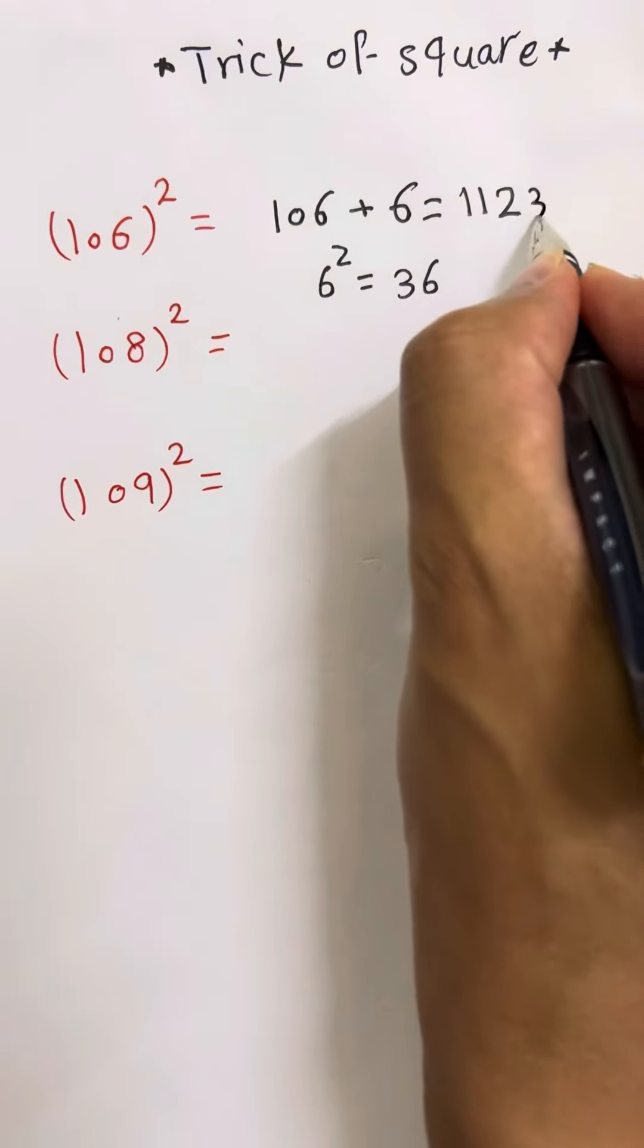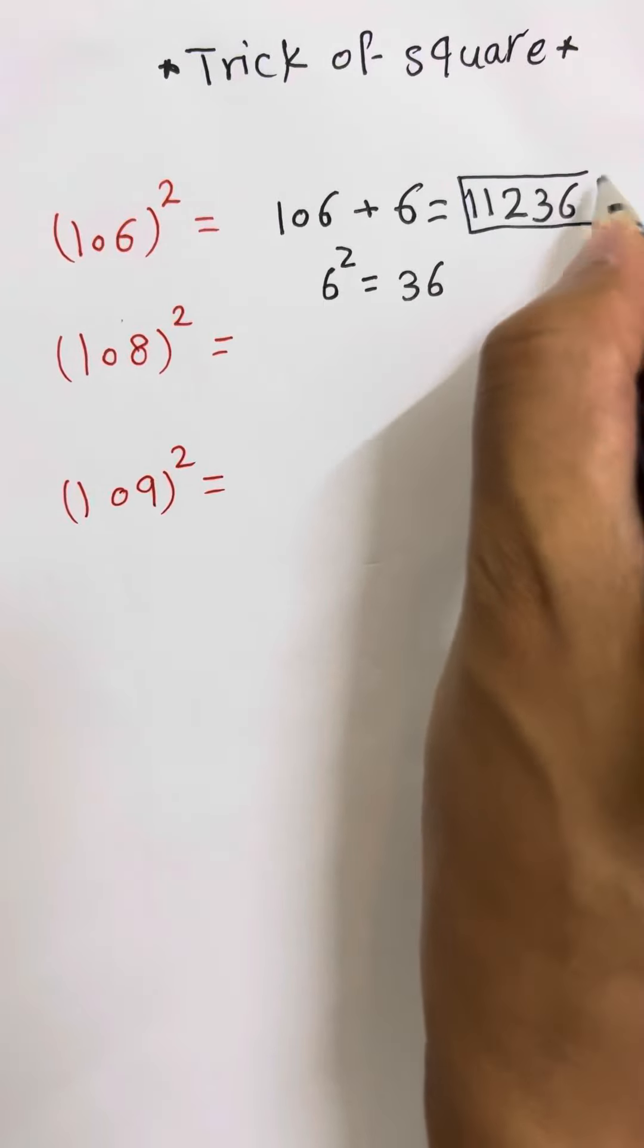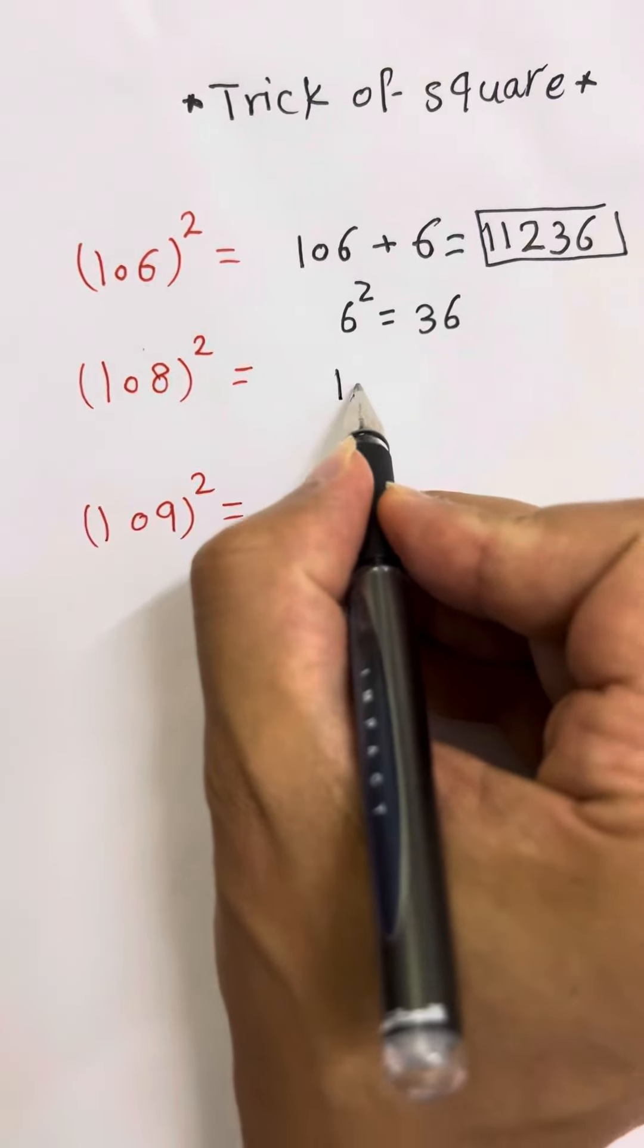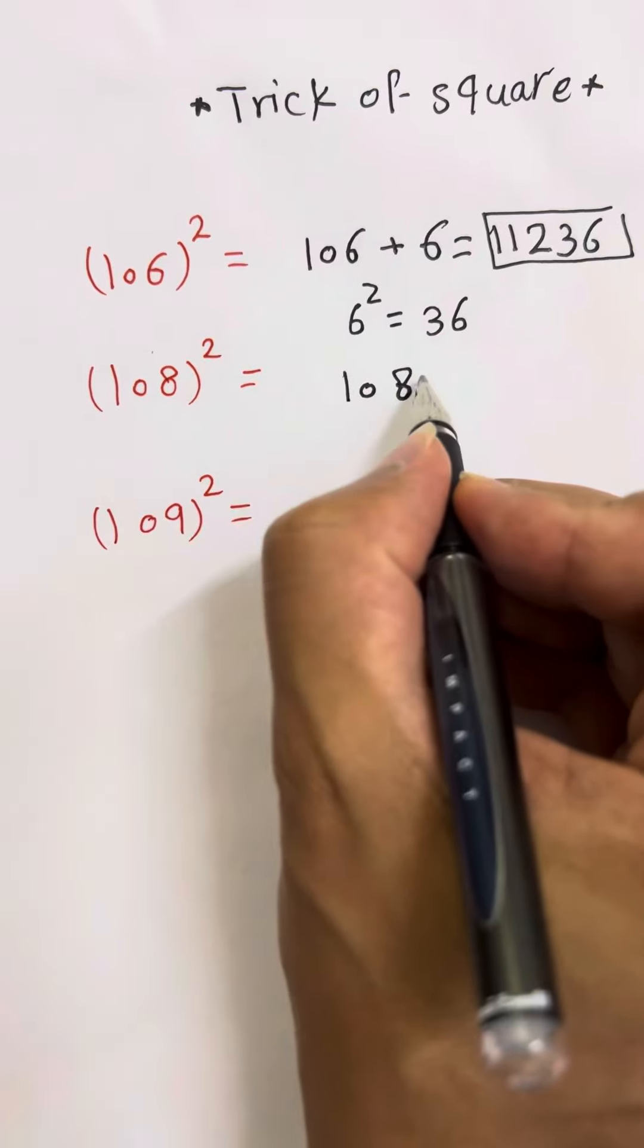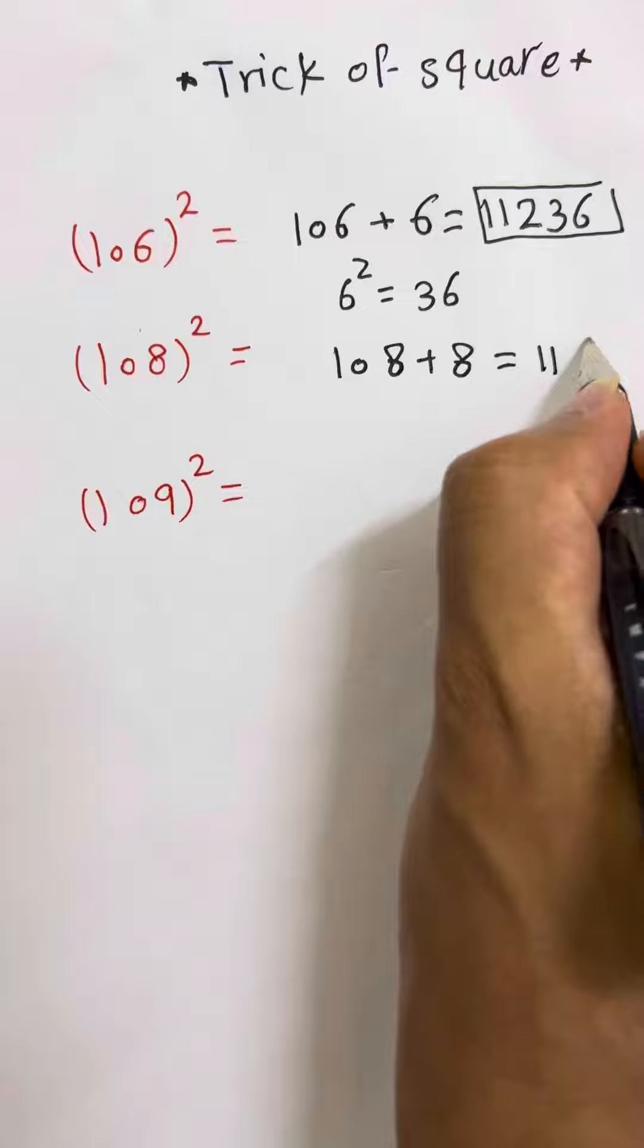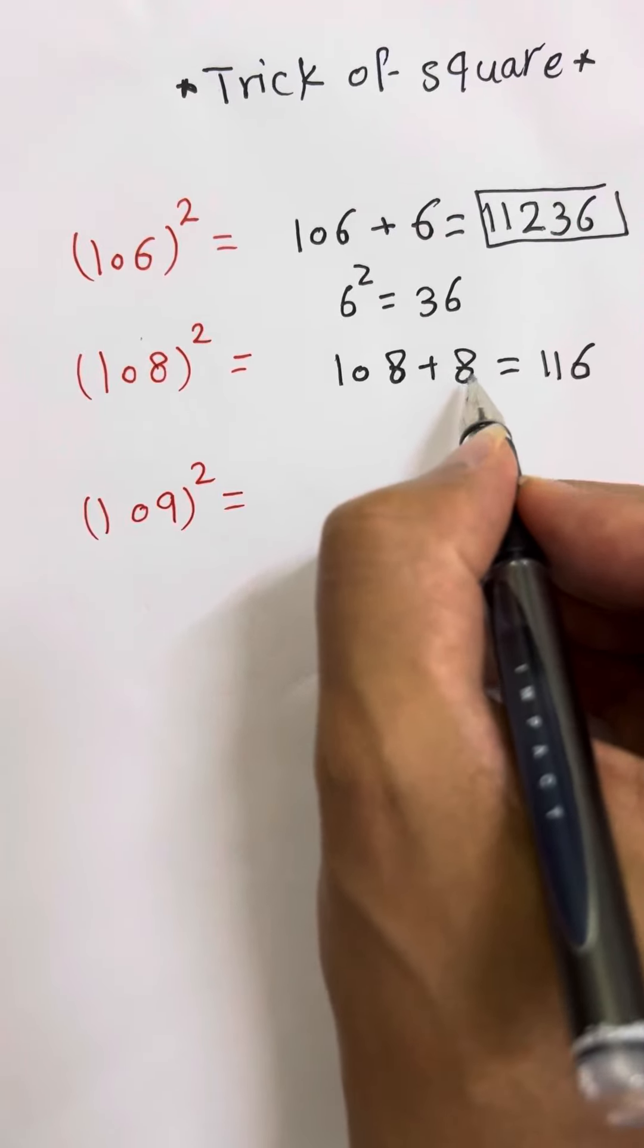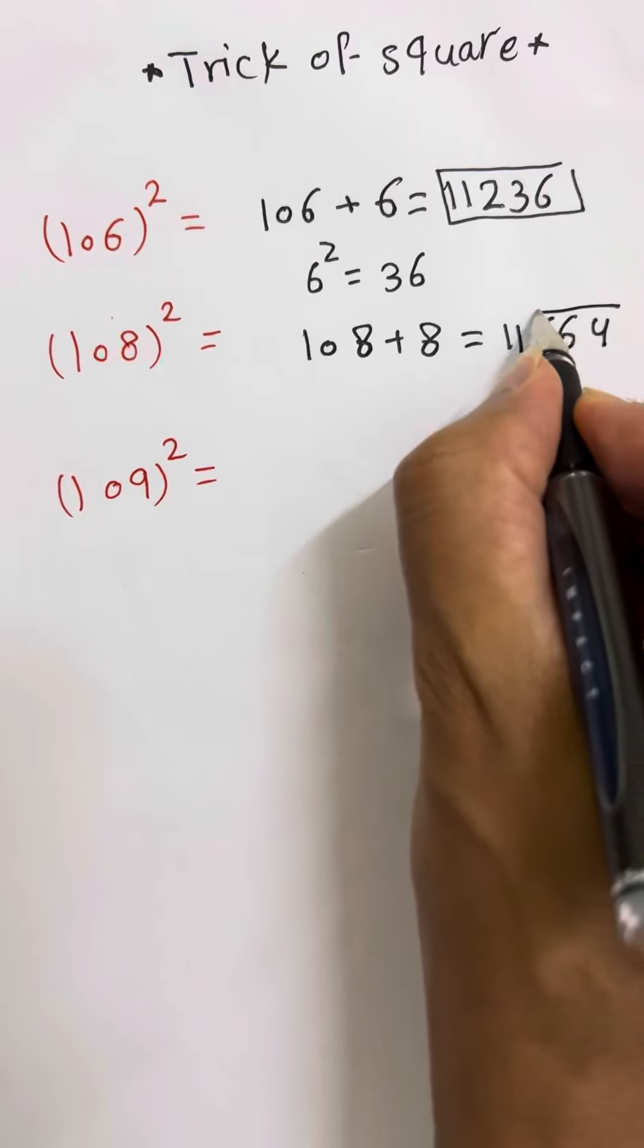Let's work the second one, same exactly. Put the number same without any square or power. Then add the first number from the right, which is 8: 108 + 8 = 116. Then the 8 here, make it as a square or power 2. It will be 64. The final answer for the square of this number 1.08 is 11664.